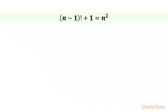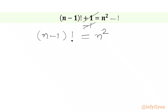Let's get started. I will subtract 1 from both sides so that I will get n squared minus 1 on the right hand side. We will cancel plus and minus 1 from the left hand side, and we will write our equation as (n minus 1) factorial equal to n squared minus 1.